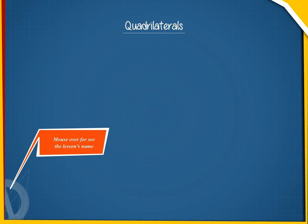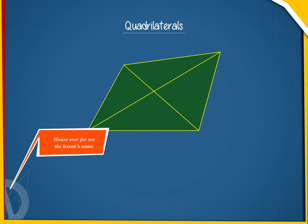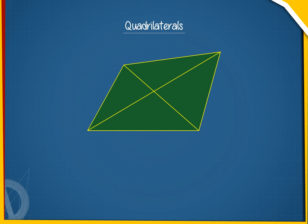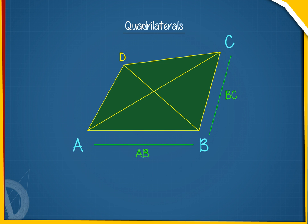Quadrilaterals. A polygon having four sides is called a quadrilateral. In a quadrilateral ABCD, AB, BC, CD and AD are its four sides.